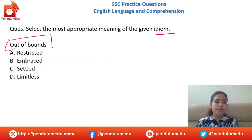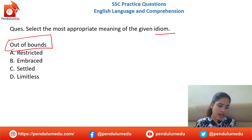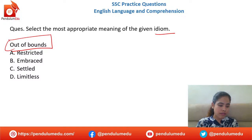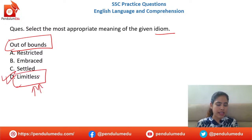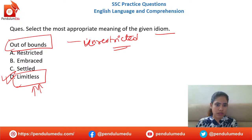Idiom: 'Out of bounds' — options: restricted, embraced, settled, limitless. The meaning of 'out of bounds' is 'unrestricted' or 'limitless.' Option D — limitless — is absolutely correct. Out of bounds means something that is unrestricted.